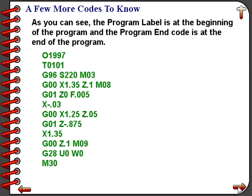Here you can take a look at a complete program. It begins with the program label O1997, calls up Tool 1 with Offset 1 T0101, turns on the spindle at 220 surface feet per minute in the forward rotation G96 S220 M03, rapids to X1.35 and Z0.1, and turns on the coolant with G00 X1.35 Z.1 M08. The next line G01 Z0 F.005 feeds the tool to Z0 at a feed rate of 5 thou per revolution.